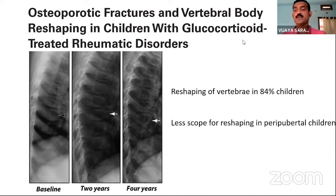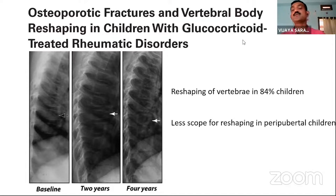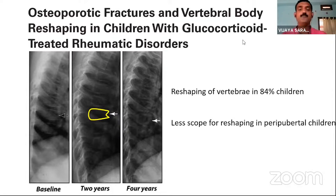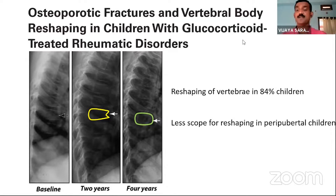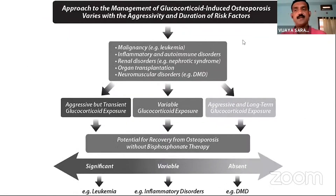An important and unique finding from this study: once glucocorticoids are stopped, there is reshaping of the vertebrae occurring in almost 84% of children. This means glucocorticoid-induced osteoporosis is reversible in growing children. Radiographically, a patient showing anterior wedging and anterior cortical buckling after two years of therapy demonstrated nice vertebral reshaping on four-year follow-up, indicating recovery of GIO. However, there is less scope for reshaping when the child is in the peripubertal age.